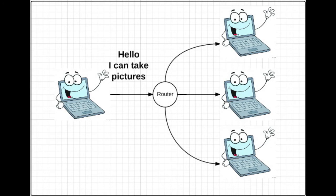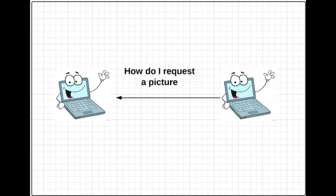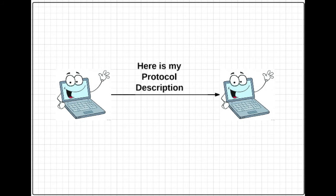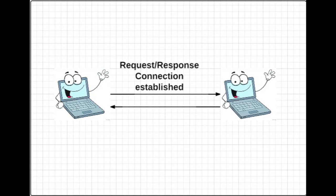UPnP lets a computer send out a message to all the other computers in a local network. The other devices that are seeking to establish connections with this camera will do so. Once the camera has sent back the description of its web services, the connection has been established.